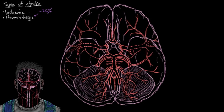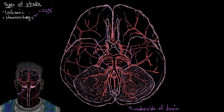Let me orient you to what we're looking at here. Right now we're looking at an underside view of a brain, because this view allows us to see the vessels most commonly involved with hemorrhagic strokes — the vessels of the circle of Willis.